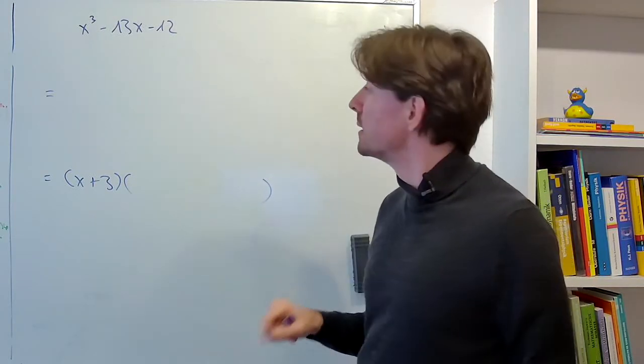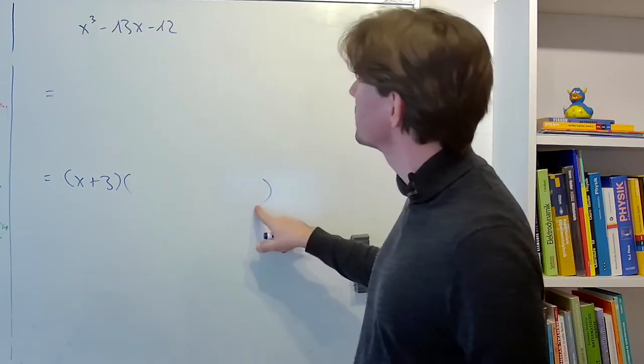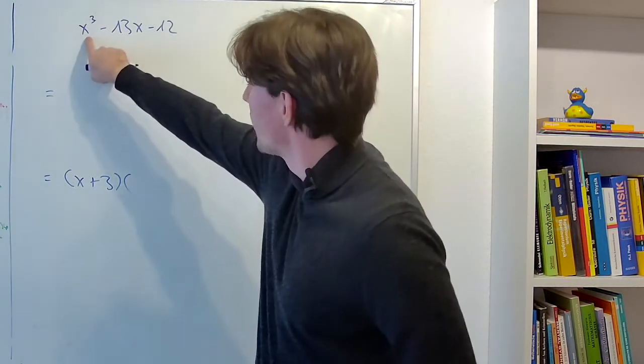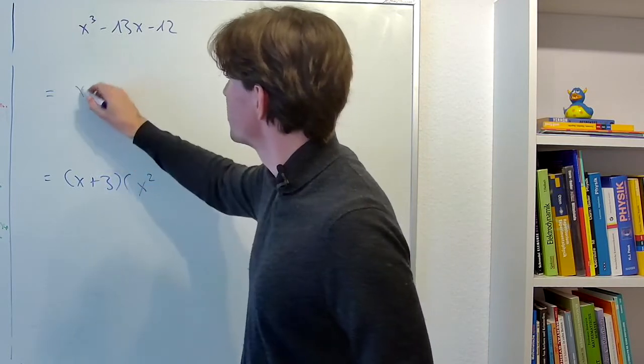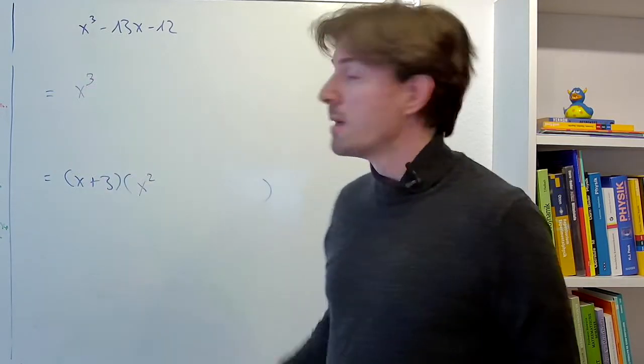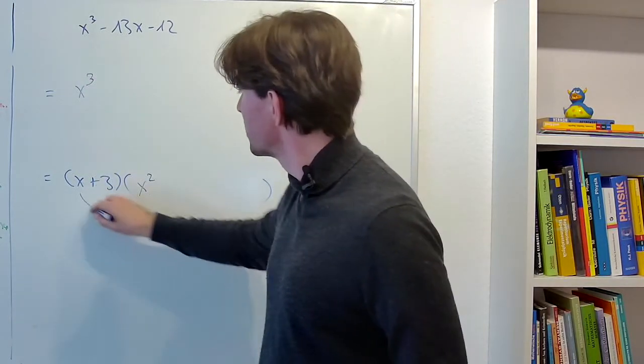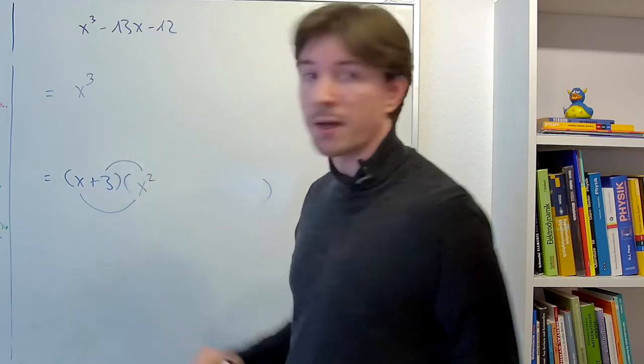And now let's see what we need in this bracket to get x cubed. Well I have an x here so if you multiply it with x squared that gives us x cubed. But it also gives us 3x squared.